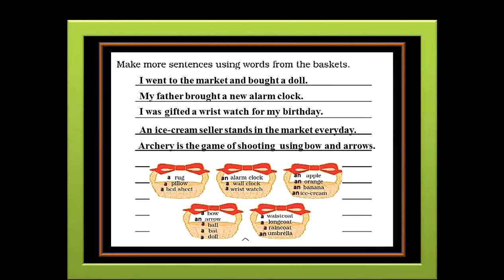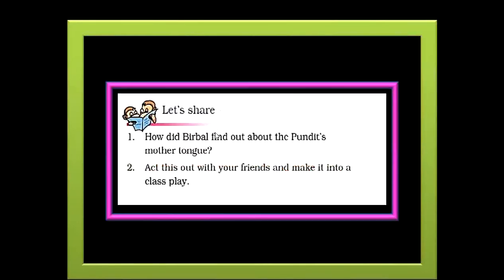The next activity included in the lesson is Let's Share. The first question is: how did Birbal find out about the Pandit's mother tongue? For this question we can say that Birbal tried to scare the Pandit by whispering into his ear. He also tickled his ear with a feather. So the Pandit who was in deep sleep got scared and shouted out in his mother tongue. This is how Birbal found out the mother tongue of the scholar. Question 2: act this out with your friends and make it into a class play. If we were in a classroom, you could have played it out.